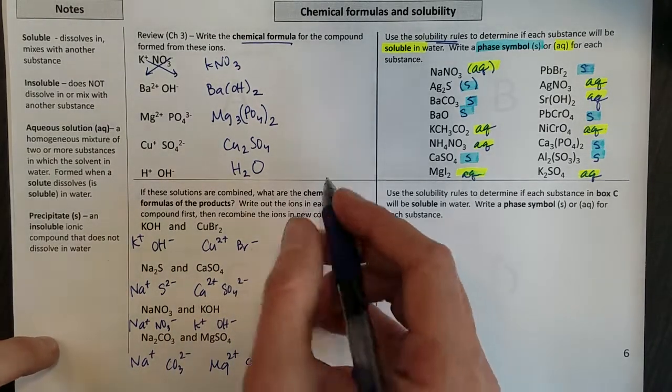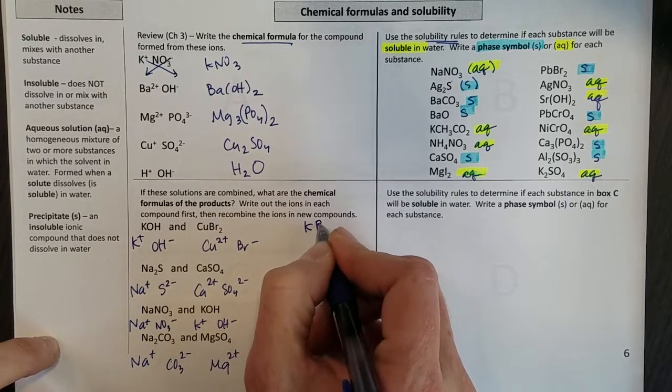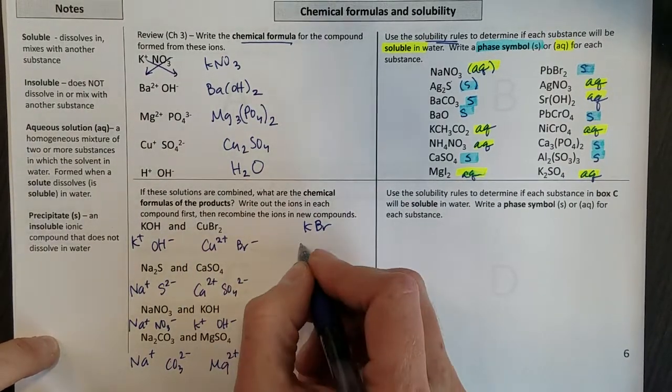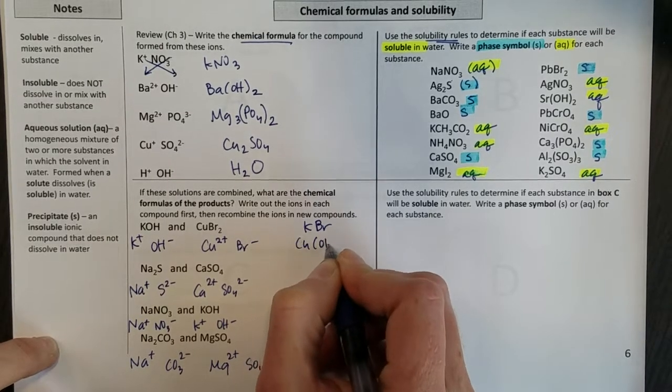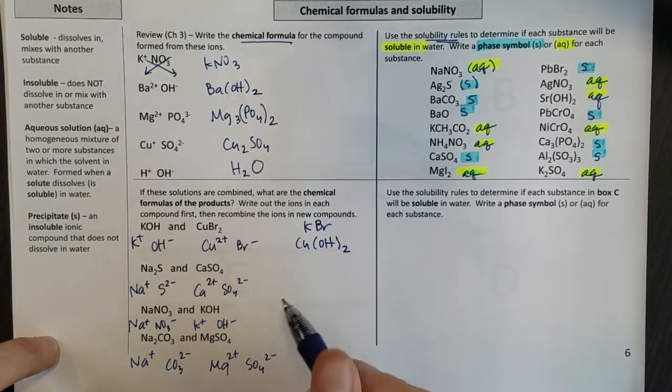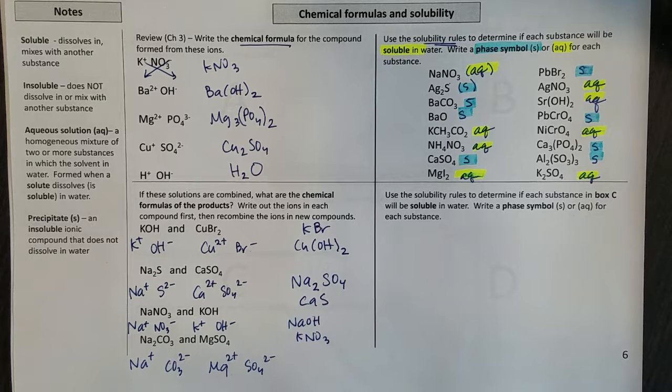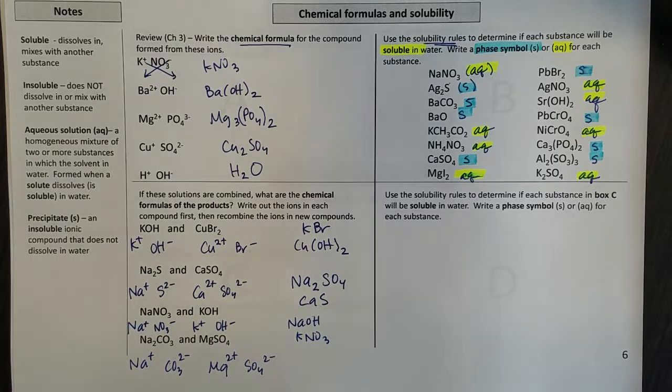K and Br together, positive, negative, become KBr. Cu2+ and OH- become Cu(OH)2. So I want to continue like that. Go ahead and work on that a minute and pause this and then come back to it. So you should be making some progress.